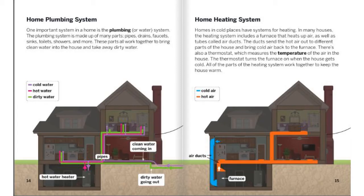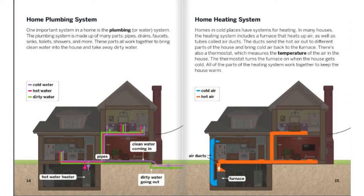Home plumbing system. One important system in a home is the plumbing or water system. The plumbing system is made up of many parts: pipes, drains, faucets, sinks, toilets, showers, and more. These parts all work together to bring clean water into the home and take away dirty water. The purple stands for cold water, pink for hot water, and green for dirty water. Hot water heater. Pipes. Clean water coming in. Dirty water going out.